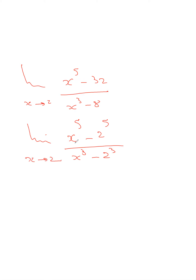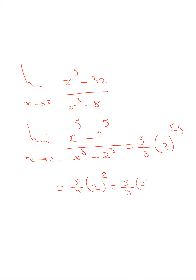The bases in numerator and denominator are the same and the powers match. Applying the theorem: it equals 5 over 3 times 2^(5-3), which is 5 over 3 times 2^2, which is 5 over 3 times 4, giving us 20 over 3.